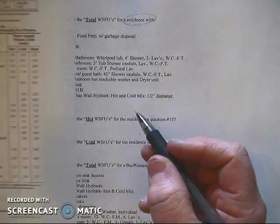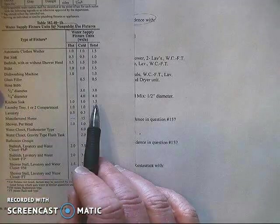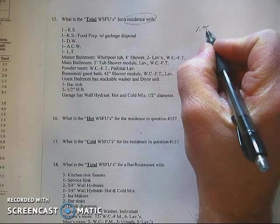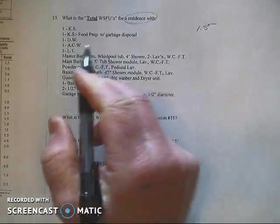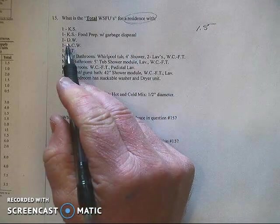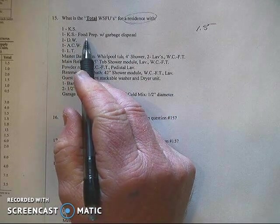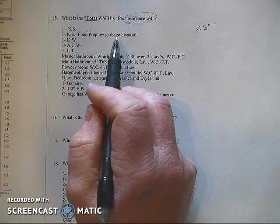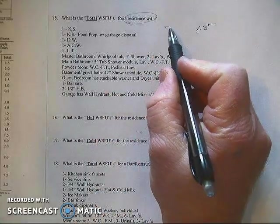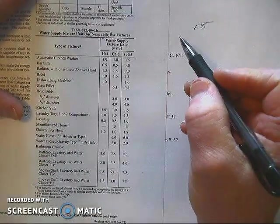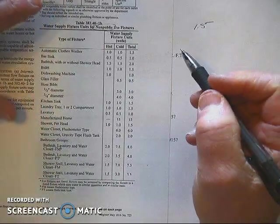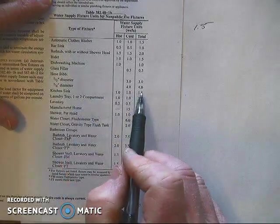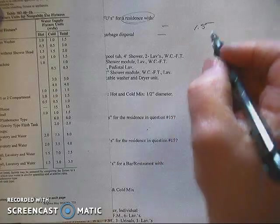So for a kitchen sink, off of our table the total load is 1.5. We'll just simply write that down and then the next one again is another kitchen sink. It just so happens that the owners are going to put in a food prep and it's going to have a garbage disposal. Realistically in this installation that doesn't change anything. The garbage disposal has no water going to it so there's no special things that we have to take a look at there. So we're just going to simply grab another kitchen sink and we're going to put it down for 1.5 WSFU.